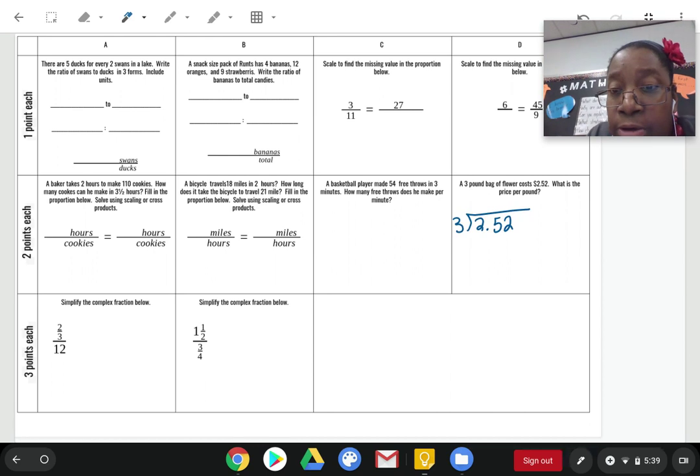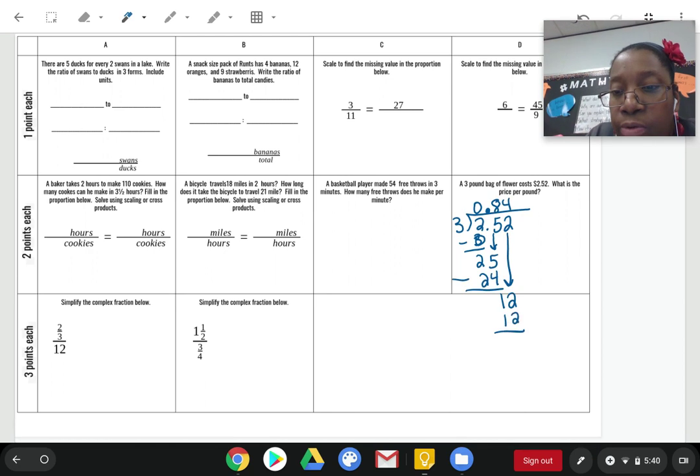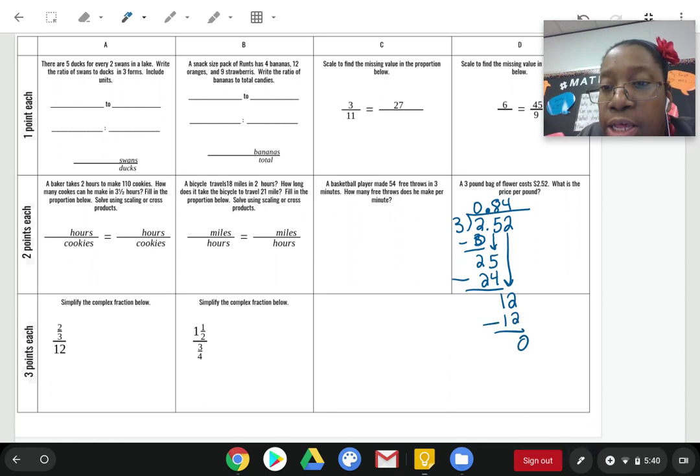Okay? So, 3 goes into 2, 0 times. All right? 0 times 3 is 0, not 3. And I forgot to do something. I've got to bring that decimal up. And I should have done that before I started to divide. Anyway, 2 minus 0 is 2. Bring down the 5. 3 can go into 25 8 times. 8 times 3 is 24. 25 minus 24 is 1. Bring down the 2. 3 can go into 12 4 times. 4 times 3 is 12. And we're done. Okay. So, don't forget to answer the question. The answer is that this cost, the flour cost, $0.84 per pound.